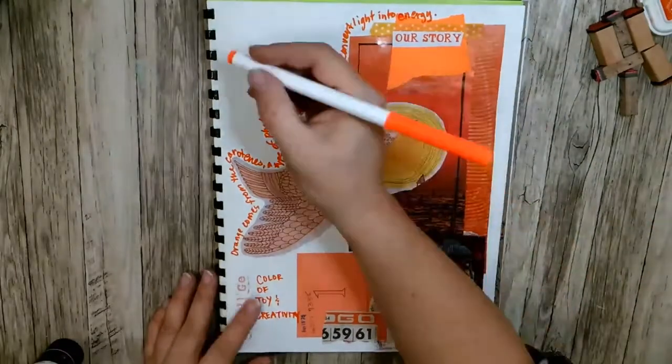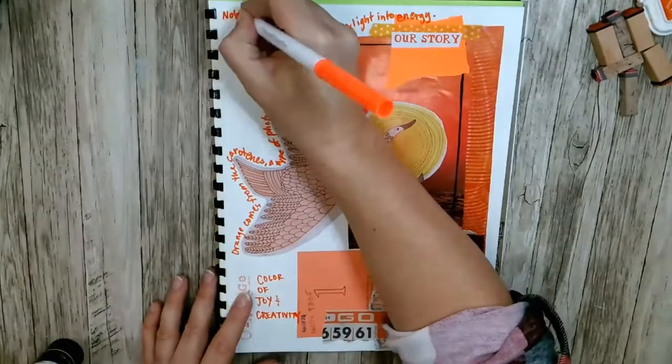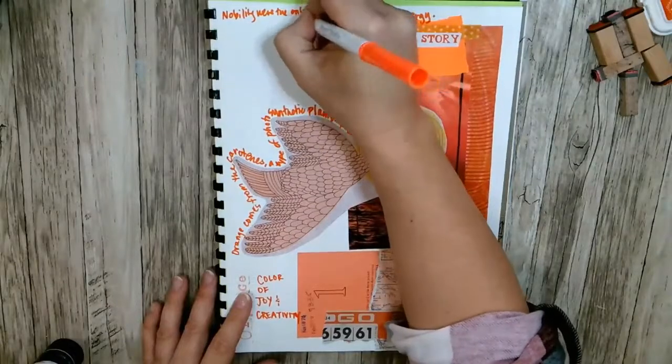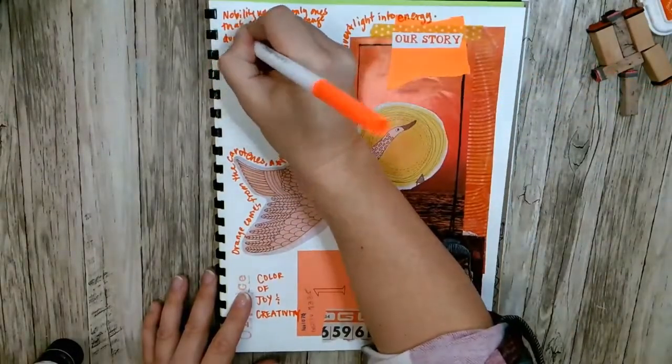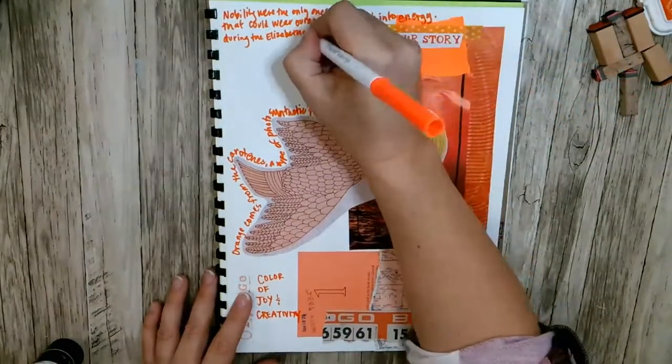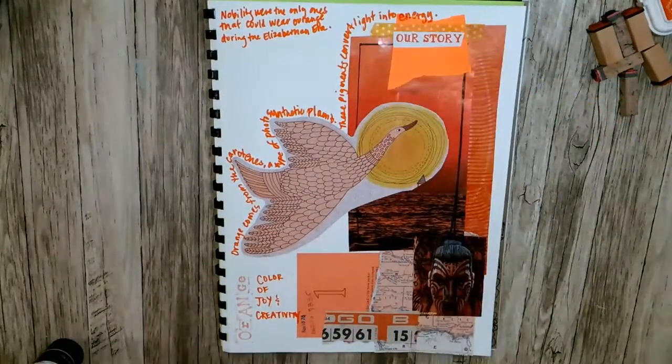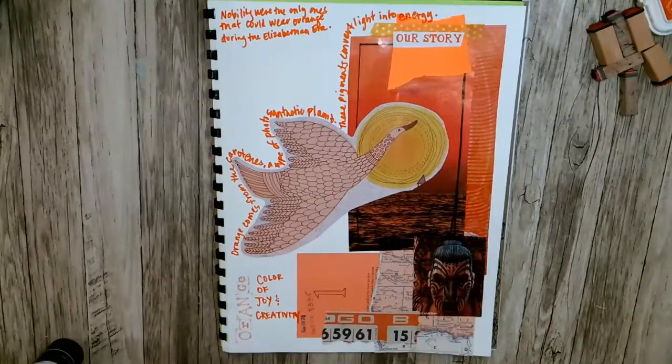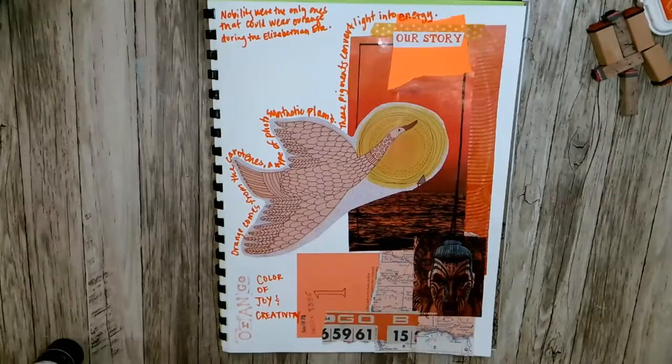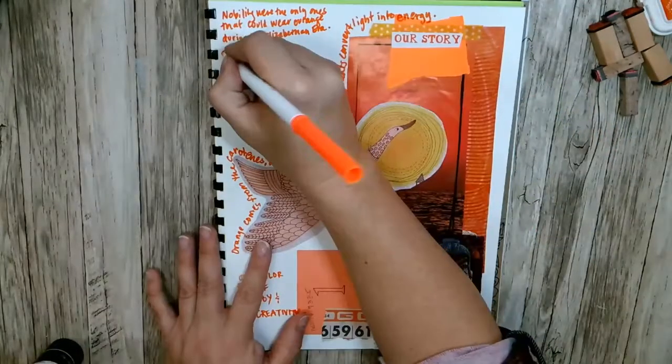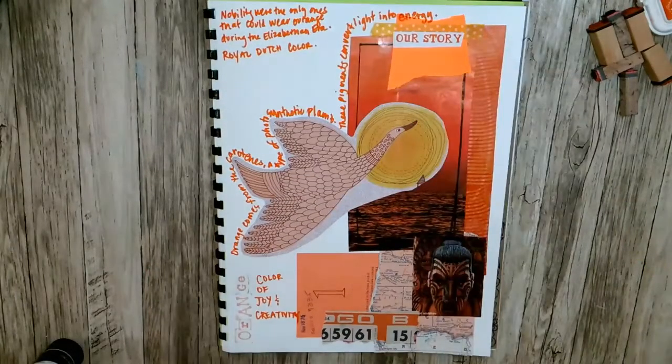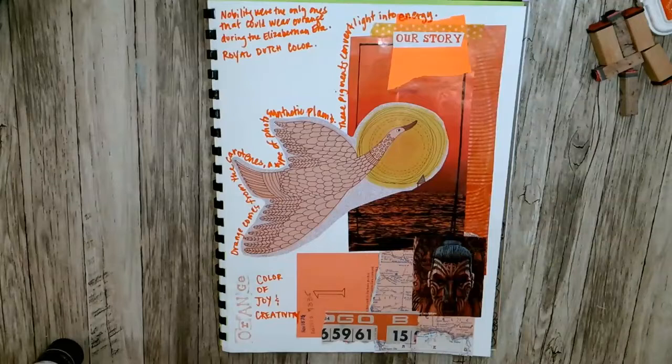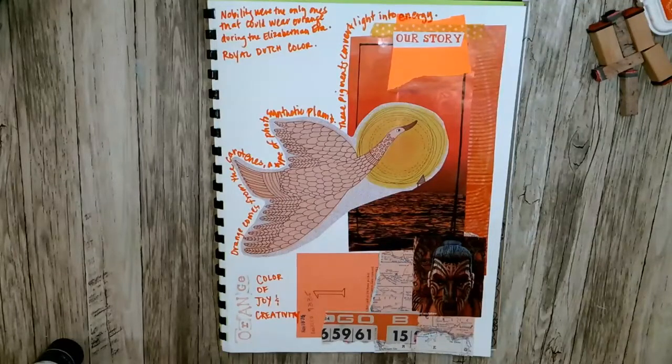Orange also is a noble color from Elizabethan times and only the nobility wore it in Elizabethan times. And let's see what else did I put down here. Orange is the royal Dutch color nowadays and it also in feng shui represents fire. So those are my five facts.